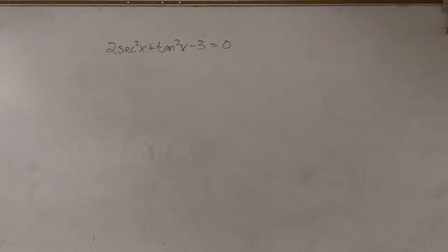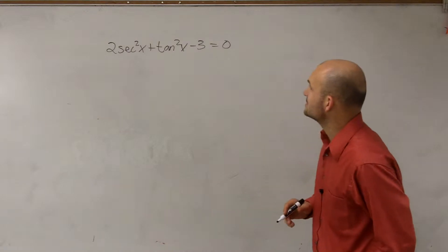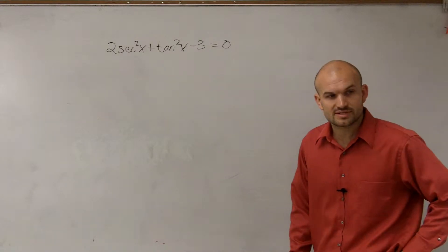All right, so looking at this problem, I have 2 secant squared of x plus tangent squared of x minus 3 equals 0.